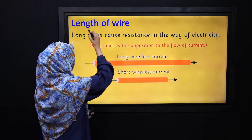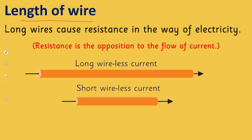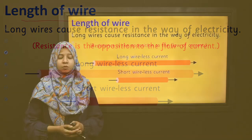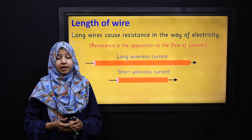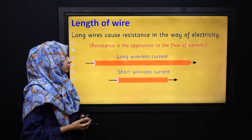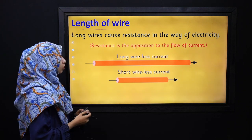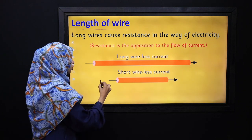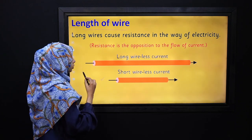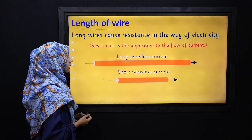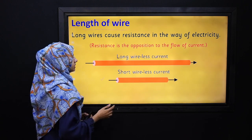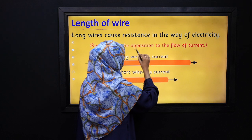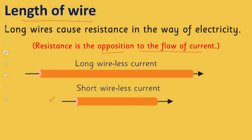Next, we have the length of wire. The length of wire plays a very important role in the conduction of electricity. If we have a short wire, then the resistance will be less. Resistance is basically the opposition to the flow of current.